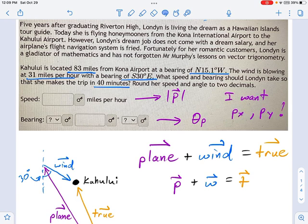If I want P and theta, I'm going to need Px and Py. In other words, if I can get the components of this vector P, I'm done. I'll just turn those components into the magnitude and direction of the vector.